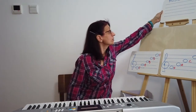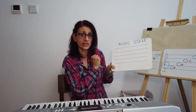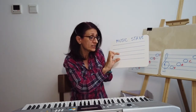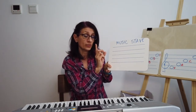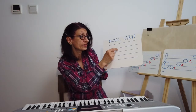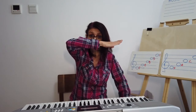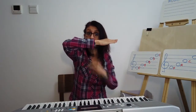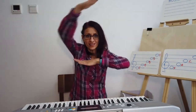Now let's take a look at the music stage. Five lines you can see, and in between those five lines there is a space. How many spaces do we have? One, two, three, four spaces. Notes on the lines look like this — the note head goes through the line. And the notes in between lines, so in the spaces, they look like this.